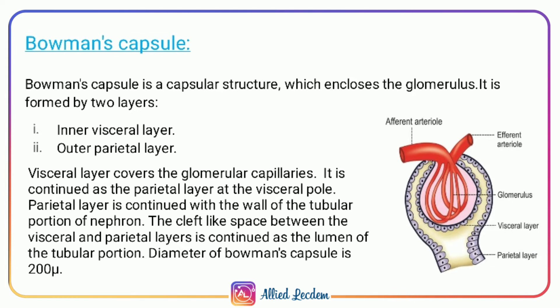The other renal corpuscular structure is Bowman's capsule, which encloses the glomerulus. The two layers which form Bowman's capsule are the inner visceral layer and the outer parietal layer. The glomerular capillaries are covered by the visceral layer. The wall of the tubular portion of the nephron is continuous with the parietal layer.